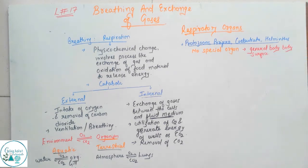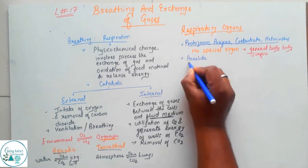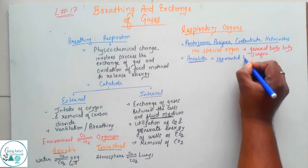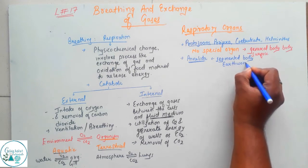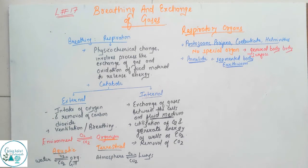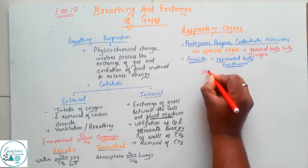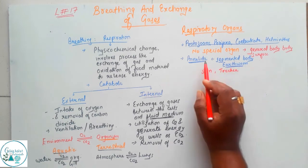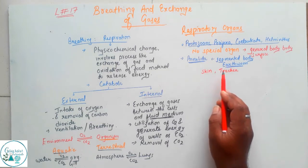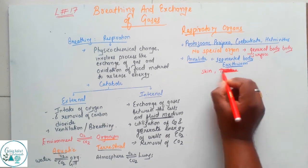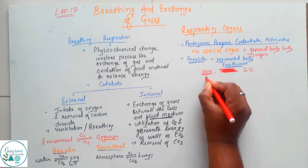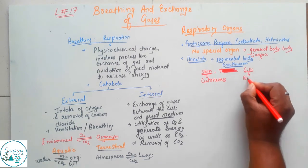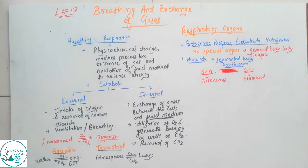If we talk about Annelida, which has a segmented body, respiration can occur through the skin — this is called cutaneous respiration — or through gills, which is called branchial respiration.